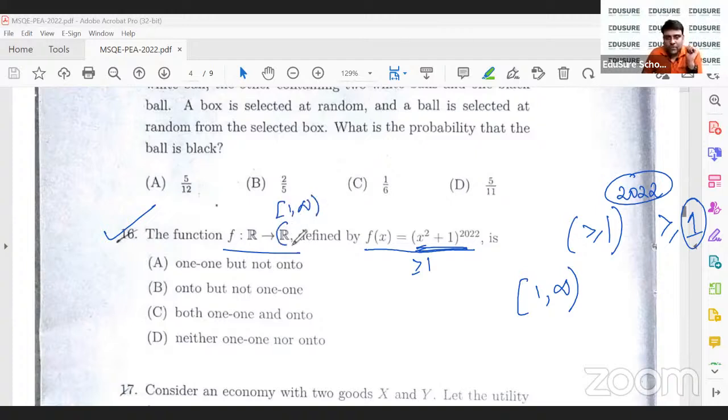Whereas, the co-domain is the set of all real numbers. Whenever the range is a subset of the co-domain, the function is called an into function. Therefore, it is definitely not onto.